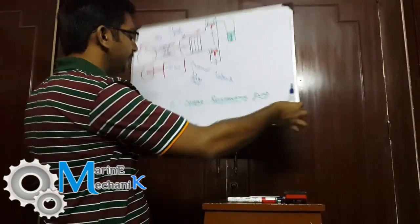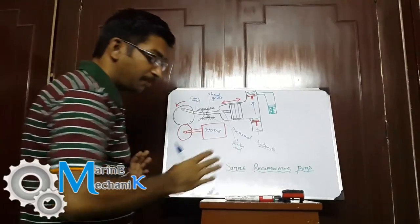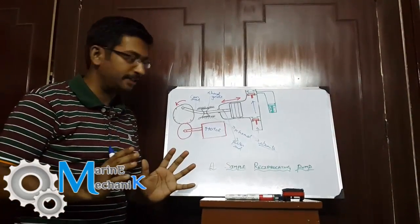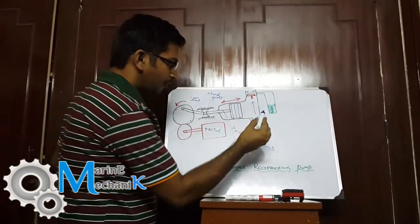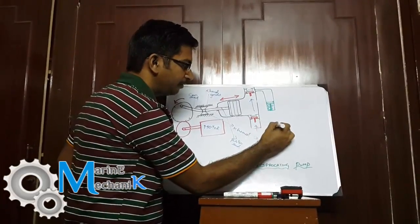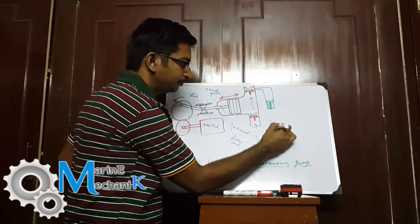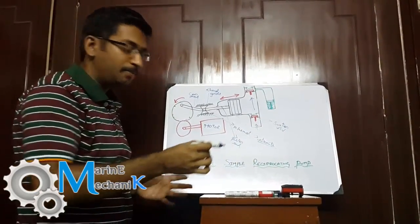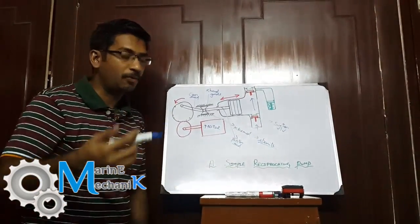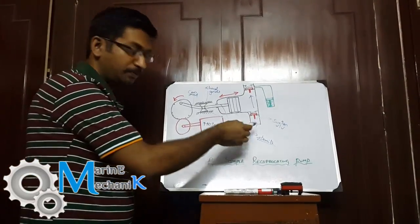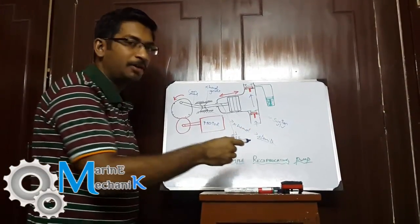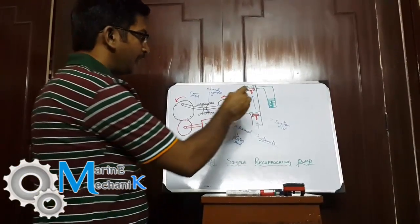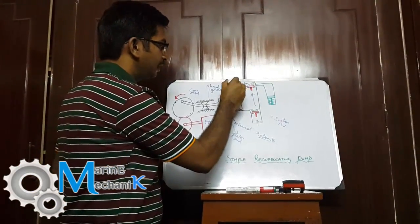Here is the suction valve and the suction piping which has valve chest—maybe one valve from the bilge holding tank, one valve from the sea chest or the main seawater line, and other valve from the bilge wells. Here is the delivery or discharge valve.